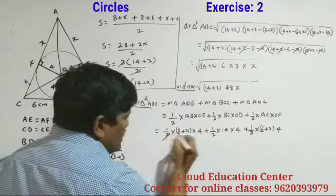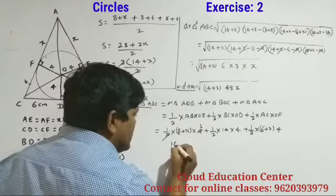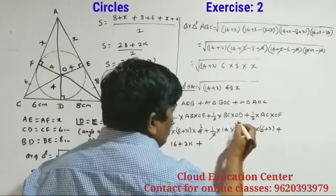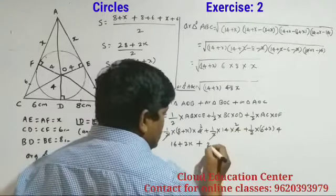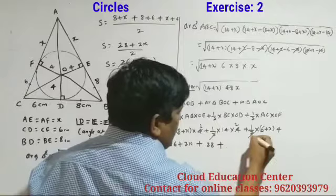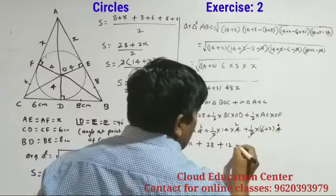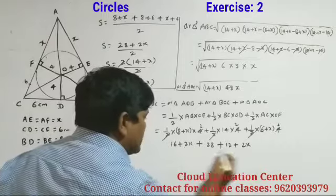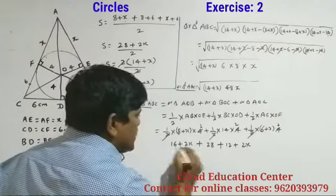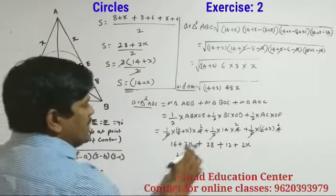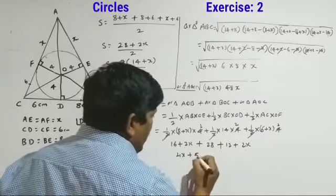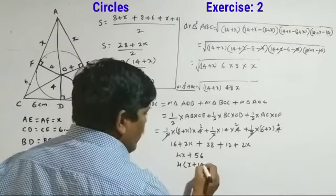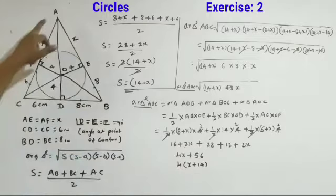Simplifying: ½ × (8+X) × 4 + ½ × 14 × 4 + ½ × (6+X) × 4. This gives 2(8+X) + 2(14) + 2(6+X) = 16+2X + 28 + 12+2X = 56 + 4X. Taking 4 as common: area of triangle ABC = 4(X + 14).